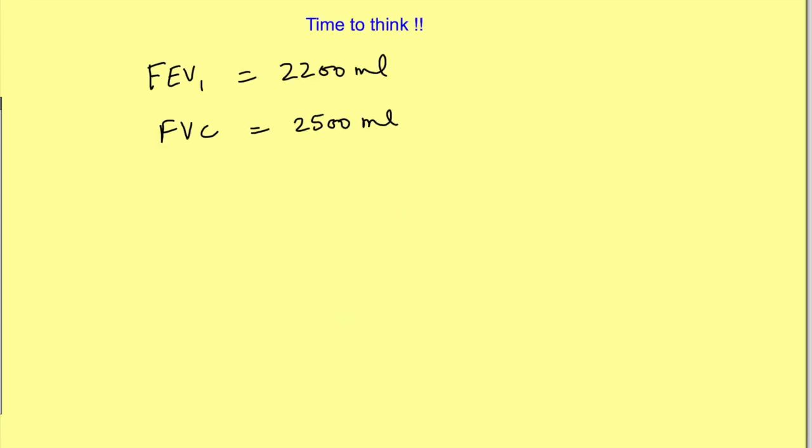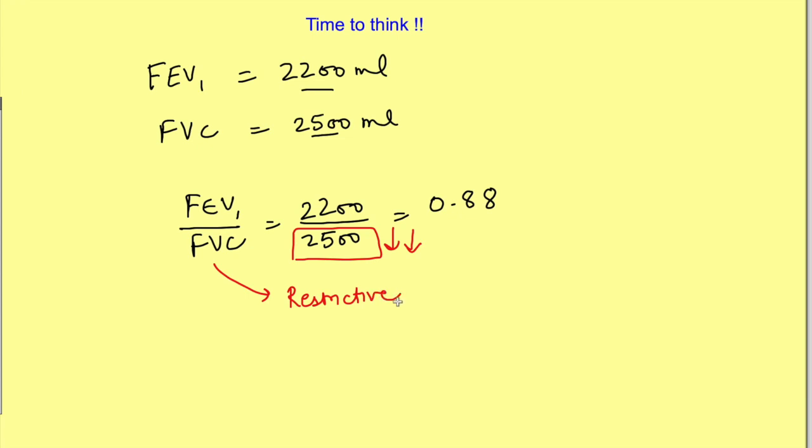Let's solve a question on FEV1 by FVC ratio. Suppose the forced vital capacity is 2500ml and FEV1 is 2200ml for a 35-year-old male. The FEV1/FVC ratio is 2200 divided by 2500, which equals 0.88. The ratio is normal, so it's not obstructive lung disease, but is it actually normal? Look at the individual values - FVC is definitely decreased, as normally for an adult male it's around 4500ml. Hence, this is restrictive lung disease where FVC has decreased and FEV1 has also decreased proportionately, causing the ratio to remain normal.